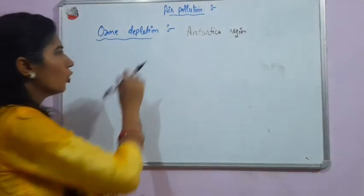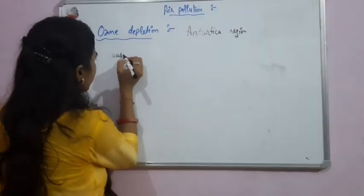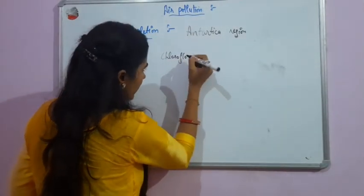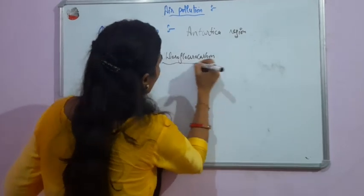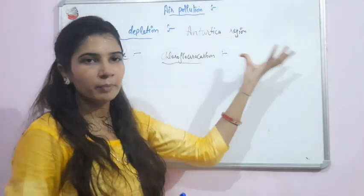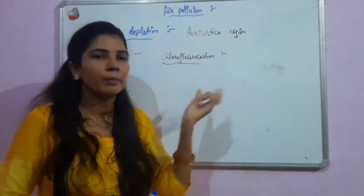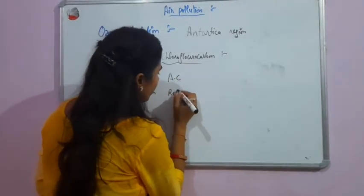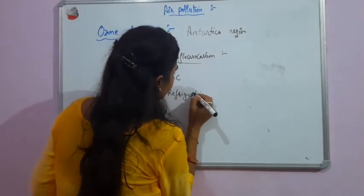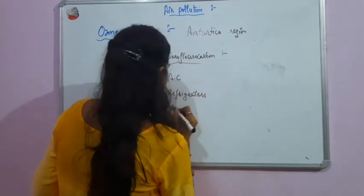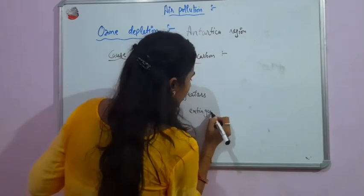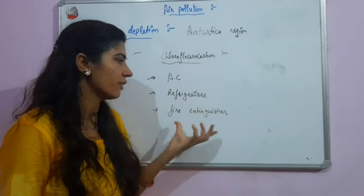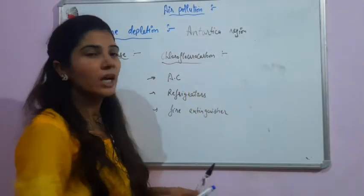If we talk about the causes of ozone depletion — which reasons are responsible for the thinning of the ozone layer — the main cause is chlorofluorocarbon gas. Chlorofluorocarbon emissions are increased in the atmosphere due to various human activities like use of air conditioners, refrigerators, and fire extinguishers, which release chlorofluorocarbon gas.